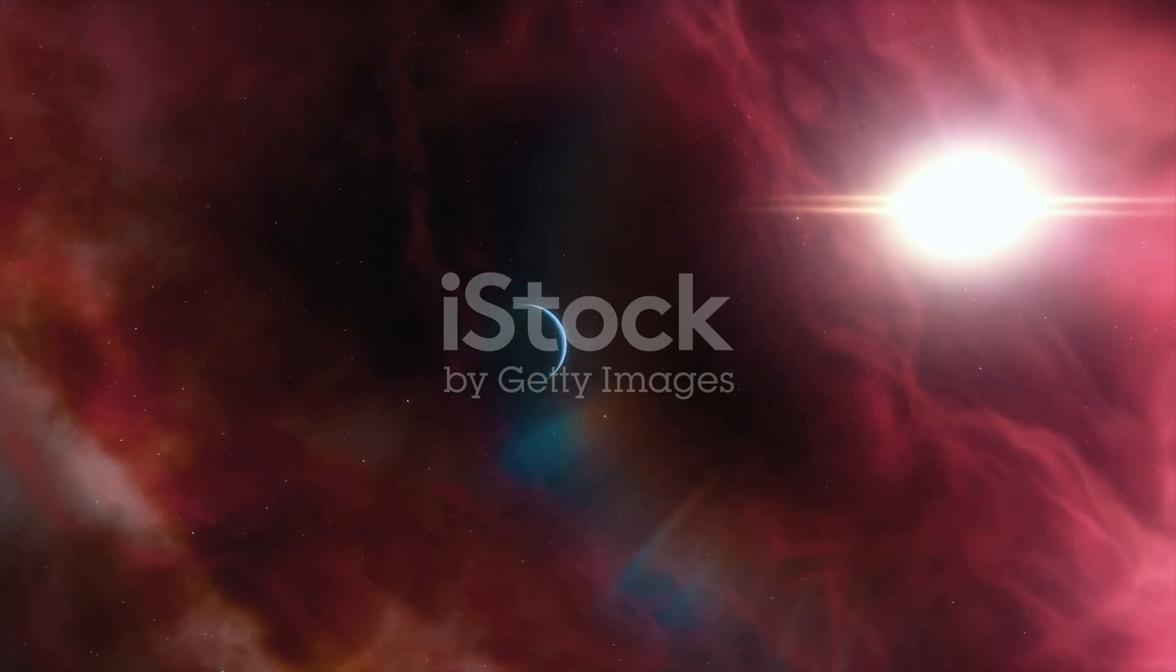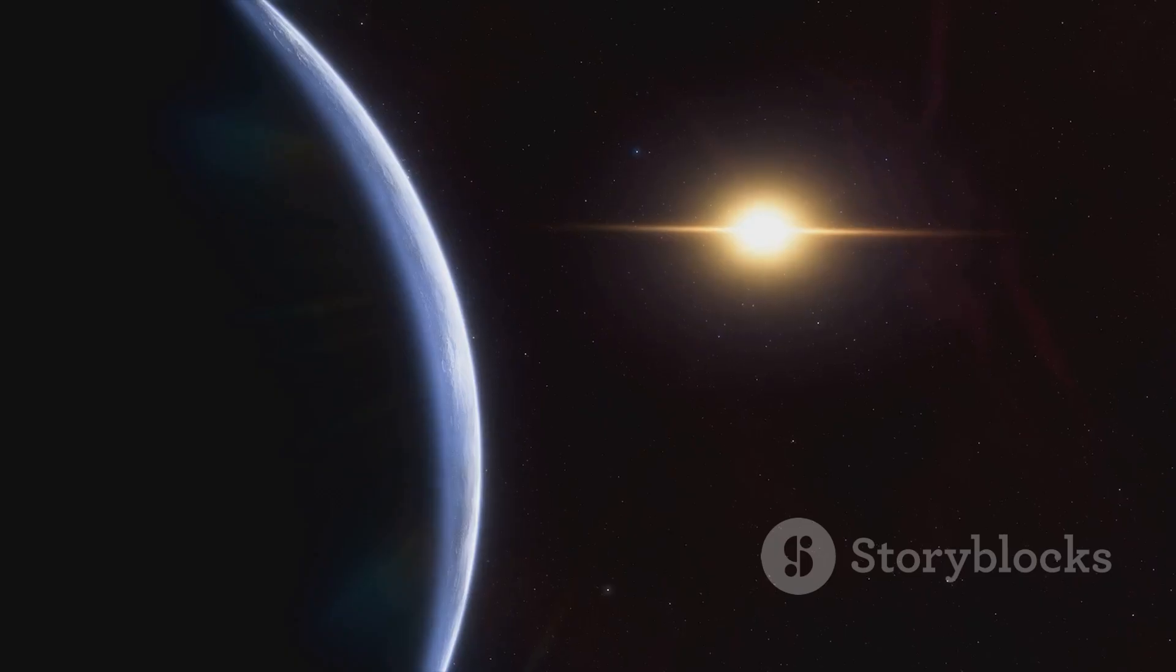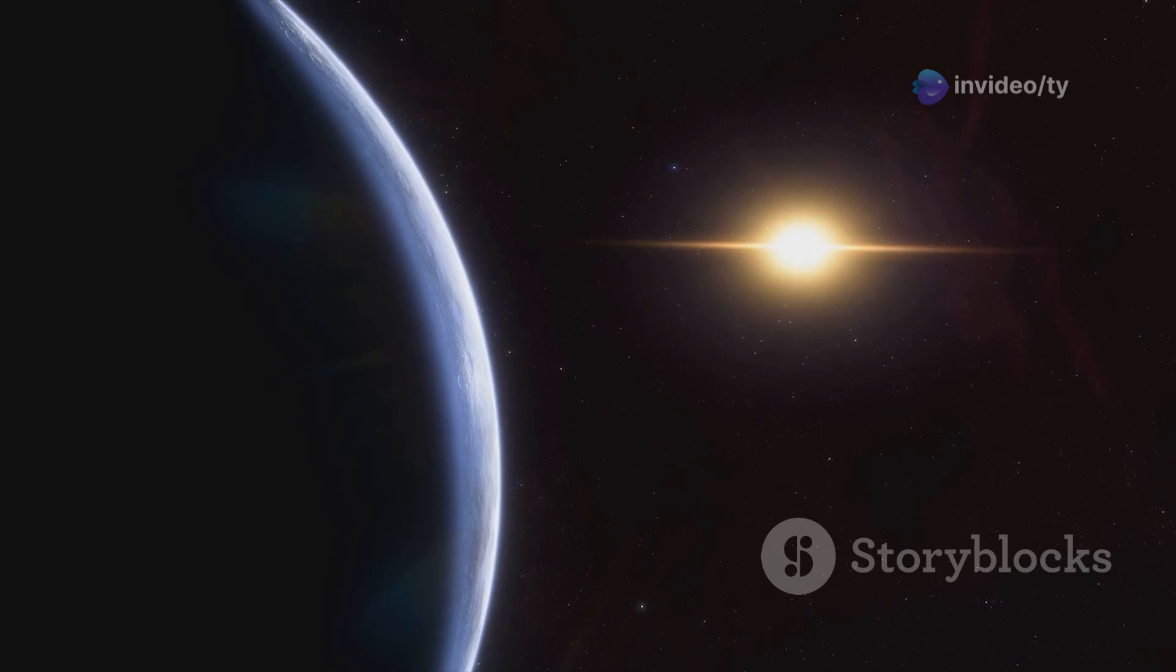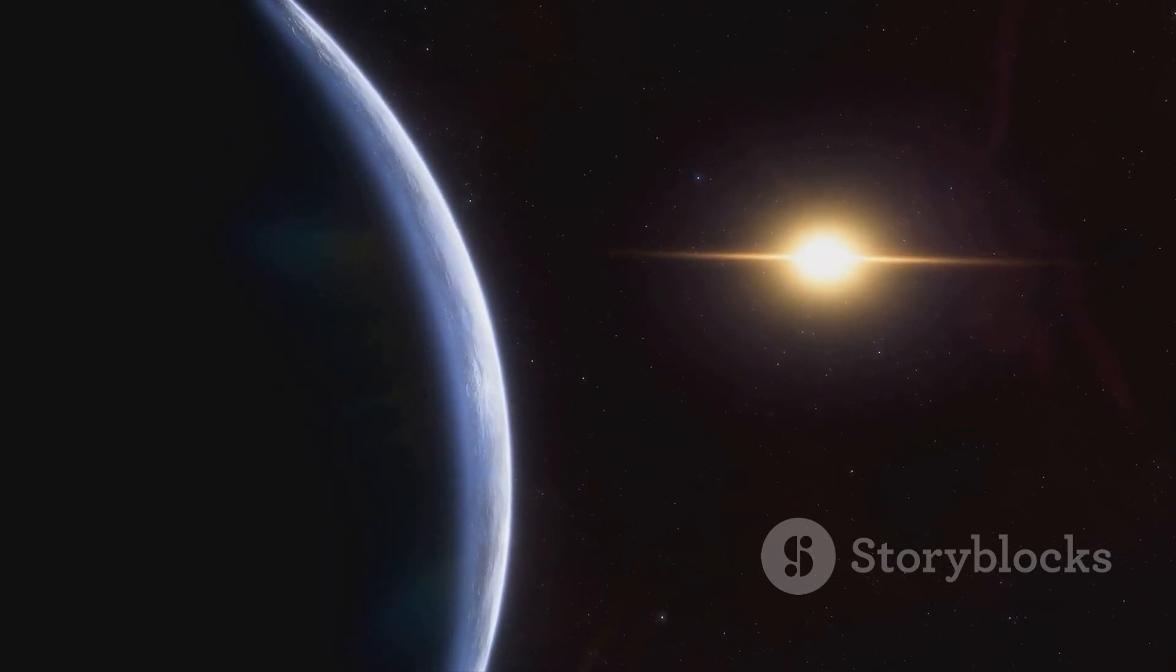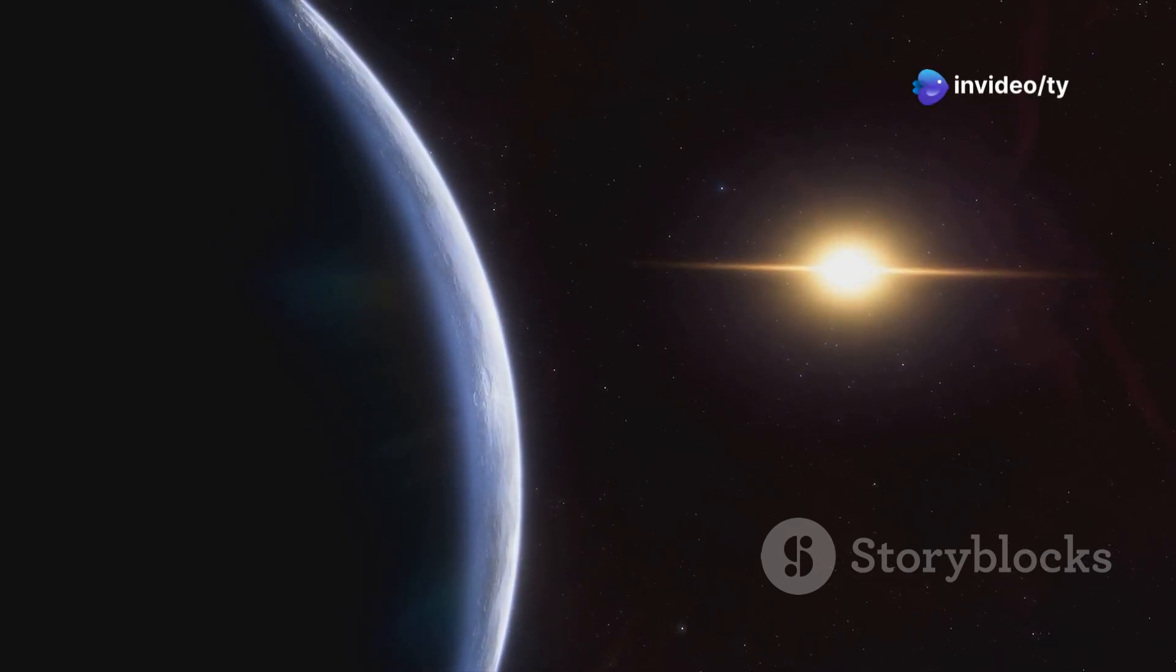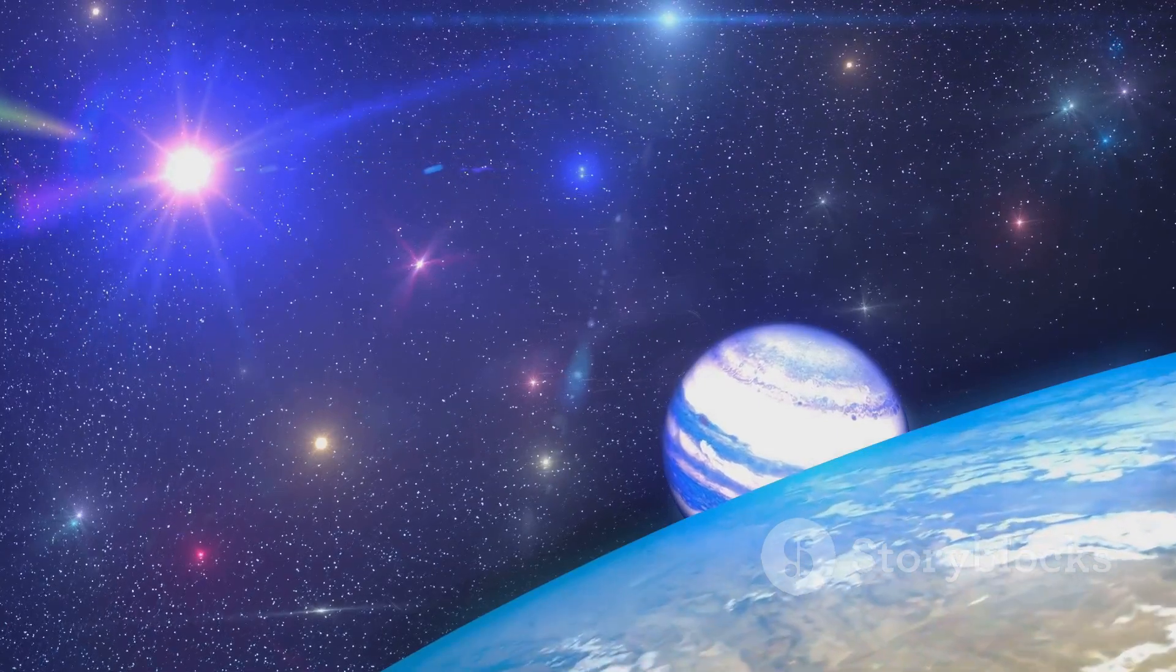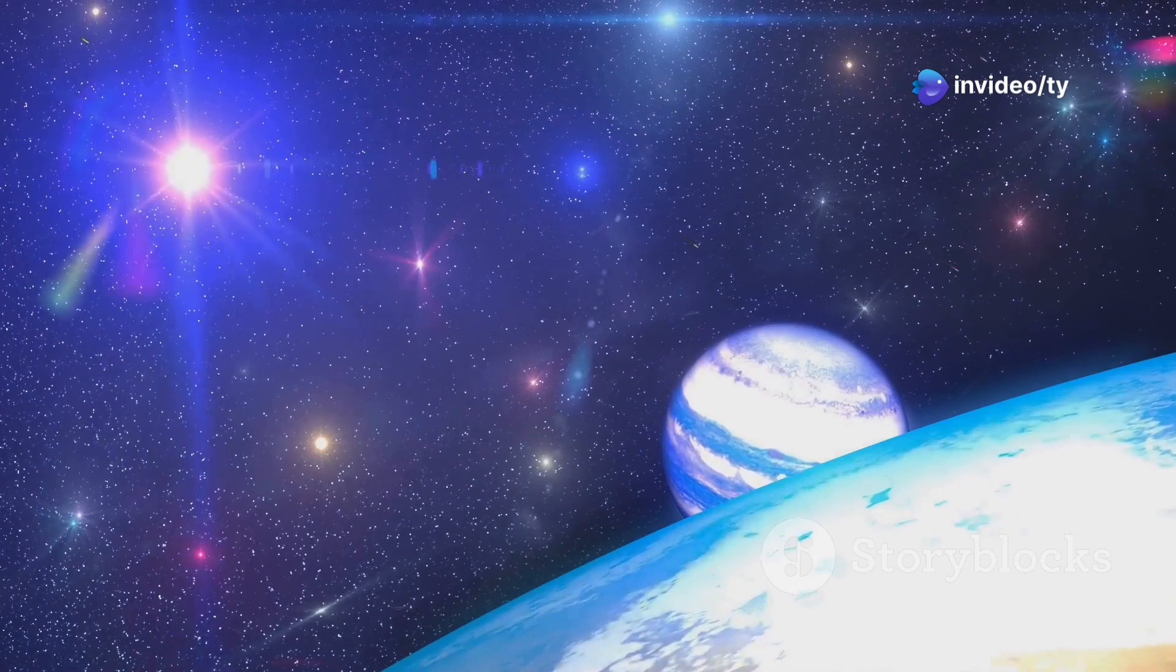Its size, composition, and orbit all suggest that it could have conditions suitable for life as we know it. Kepler 452b is about 60% larger than Earth and orbits within the habitable zone of its star, where temperatures are just right for liquid water to exist on its surface. This habitable zone, often referred to as the Goldilocks zone, is the region around a star where conditions are neither too hot nor too cold, allowing for the possibility of liquid water which is essential for life. Imagine an Earth-like world, perhaps with oceans, continents, and who knows what else, bathed in the warm glow of its sun.